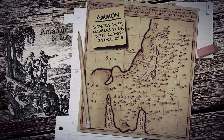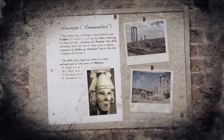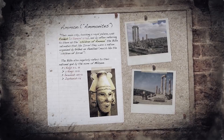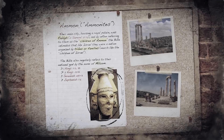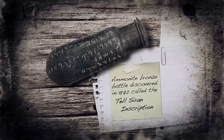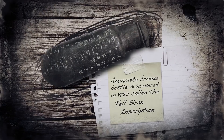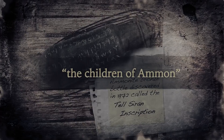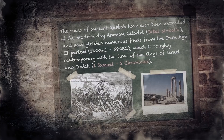The people of Ammon appear frequently on the pages of Scripture as descendants of Abraham's nephew Lot. Their land is said to have been east of the Jordan River and referred to simply as Ammon. Their main city housing a royal palace was Rabbah, and by often referring to them as the children of Ammon, the Bible intimates that, like Israel, they were a nation organized by tribes or families. The Bible also regularly refers to their national god by the name of Milcom. While the Ammonites did not leave behind extensive written records, archaeologists have been able to piece together quite a bit about them.